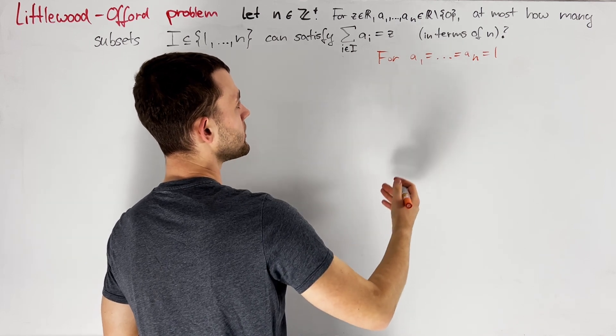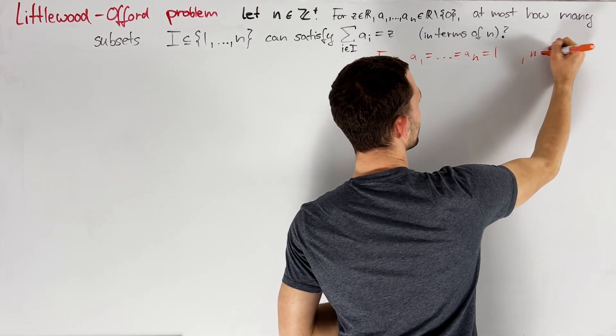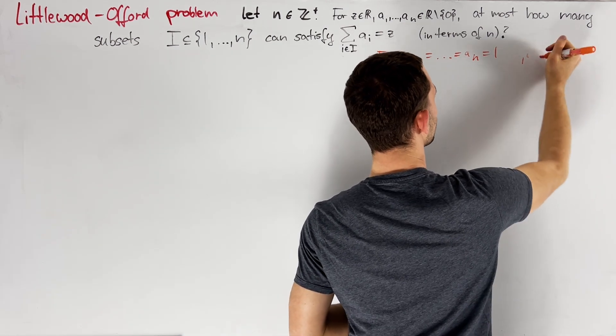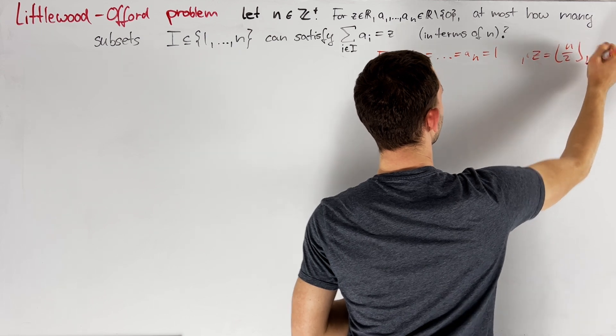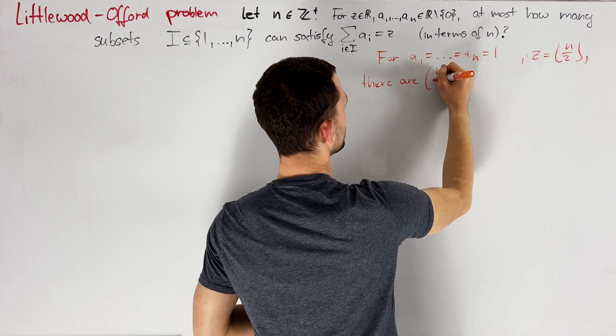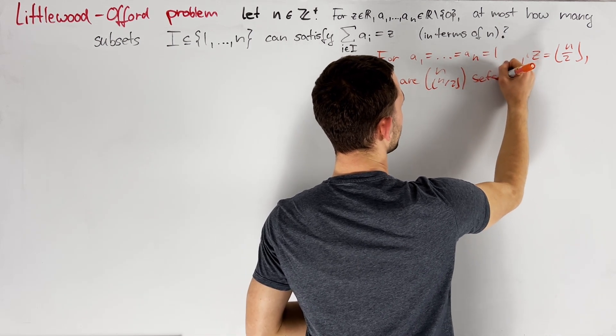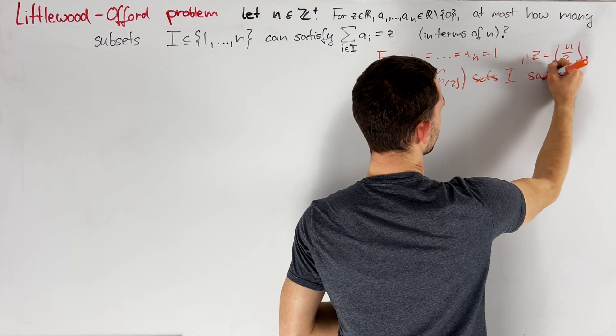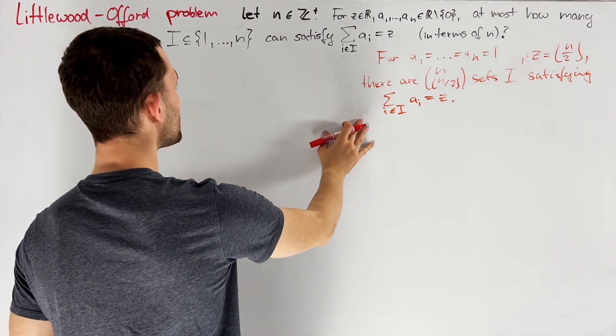The answer is maximal when z is as close as possible to n over 2. So for z equal to the floor of n half, we obtain that there are n choose floor n over 2 sets i satisfying the given condition. It turns out that this is already a best possible construction.